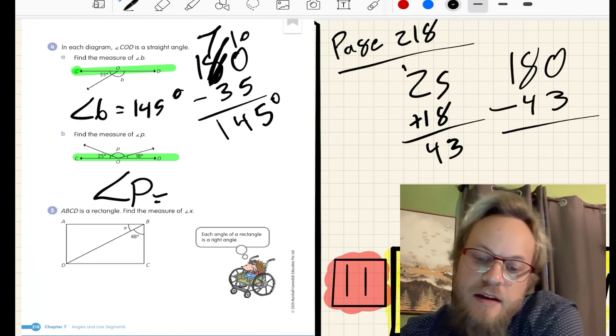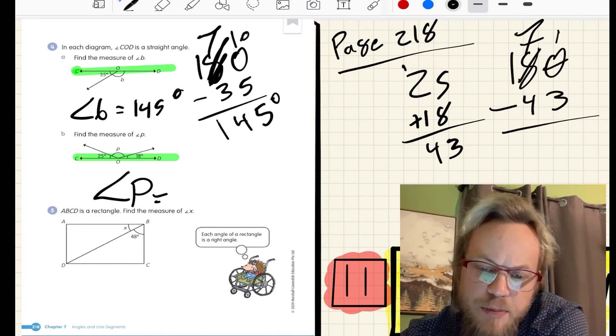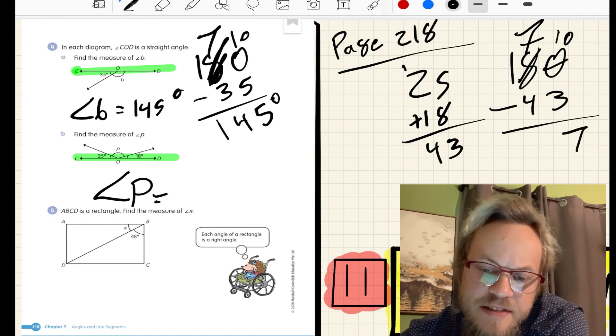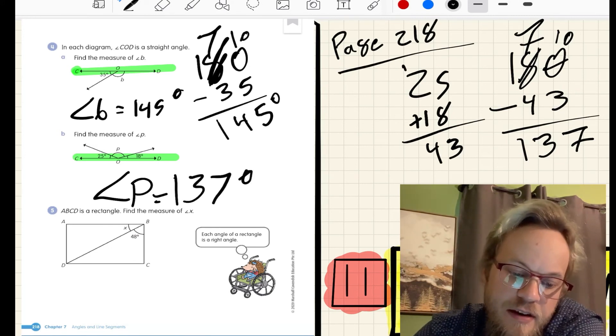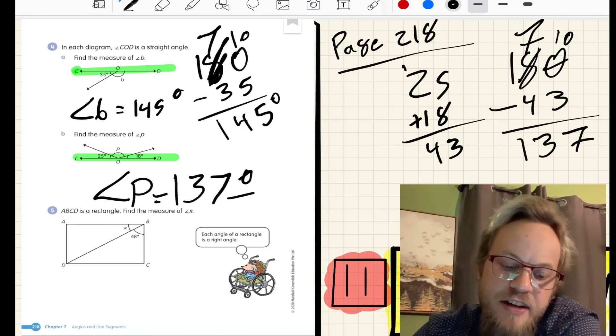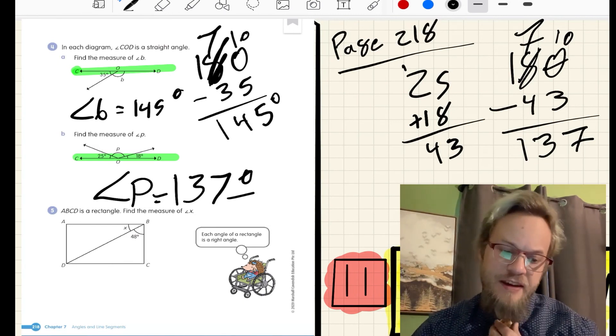I can't subtract 3 from 0, so I regroup. That becomes 70, that becomes 10. 10 minus 3 is 7. 70 minus 40 is 30. 137. So no protractor needed. Just adding and subtracting from what they already tell us.